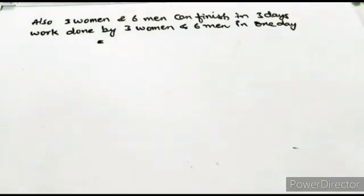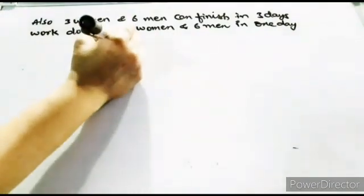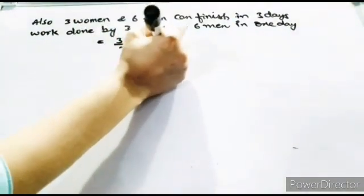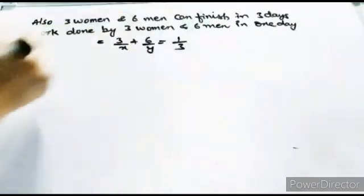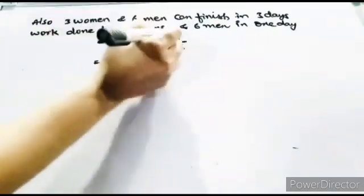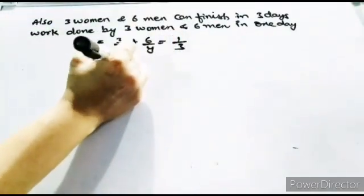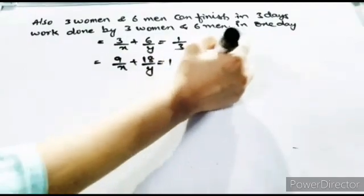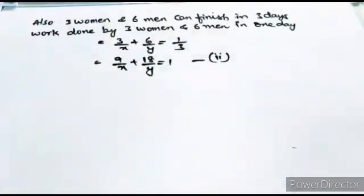Similarly, three women and six men can finish in three days. Work done by three women and six men in one day: 3/x + 6/y = 1/3. Cross-multiplying: 9/x + 18/y = 1. This is your second equation.